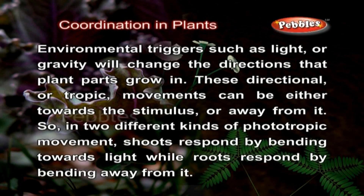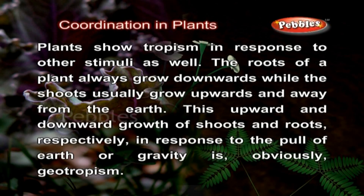Environmental triggers such as light or gravity will change the directions that plant parts grow in. These directional or tropic movements can be either towards the stimulus or away from it. In two different kinds of phototropic movement, shoots respond by bending towards light while roots respond by bending away from it. Plants show tropism in response to other stimuli as well. The roots of a plant always grow downwards while the shoots usually grow upwards and away from the earth. This upward and downward growth of shoots and roots respectively, in response to the pull of earth or gravity, is obviously geotropism.